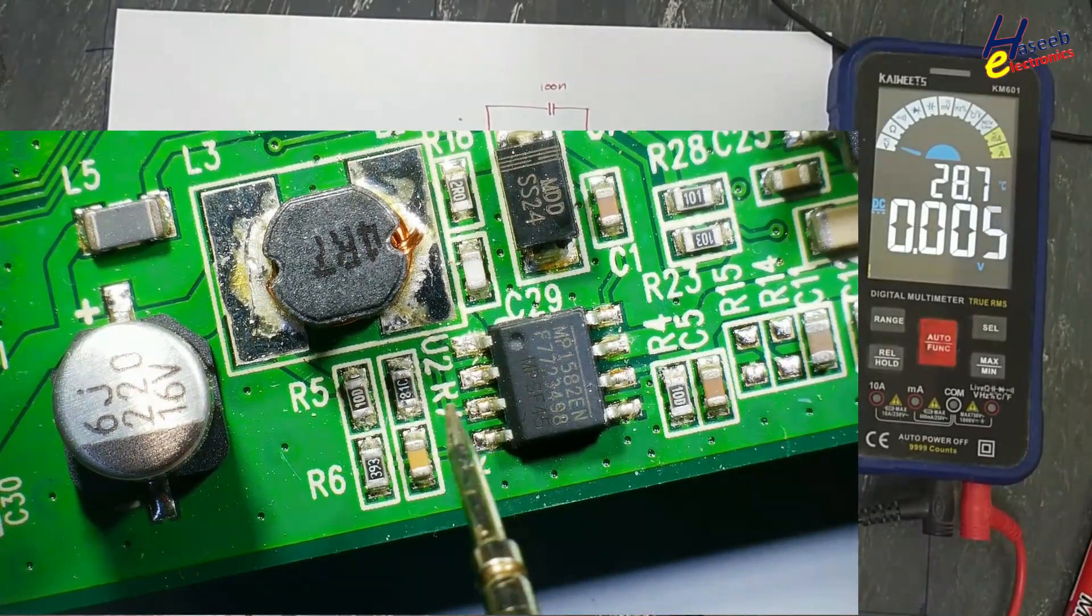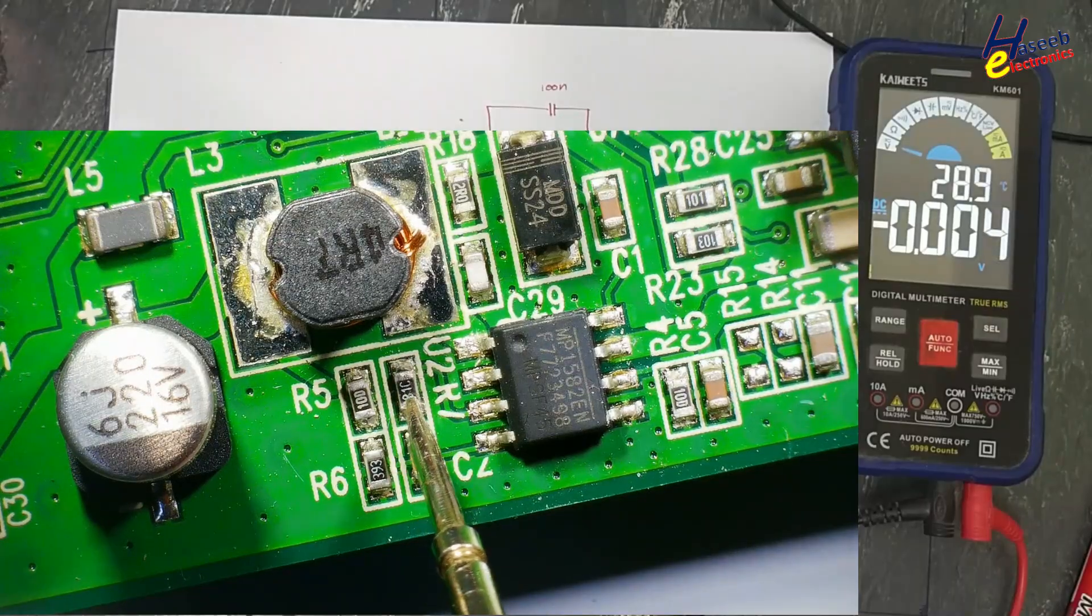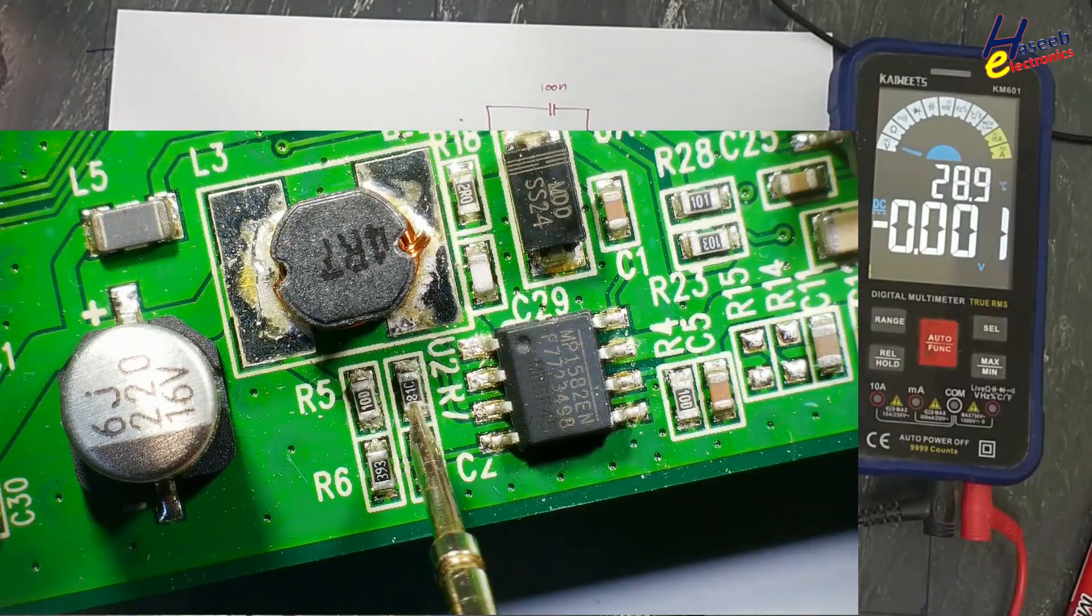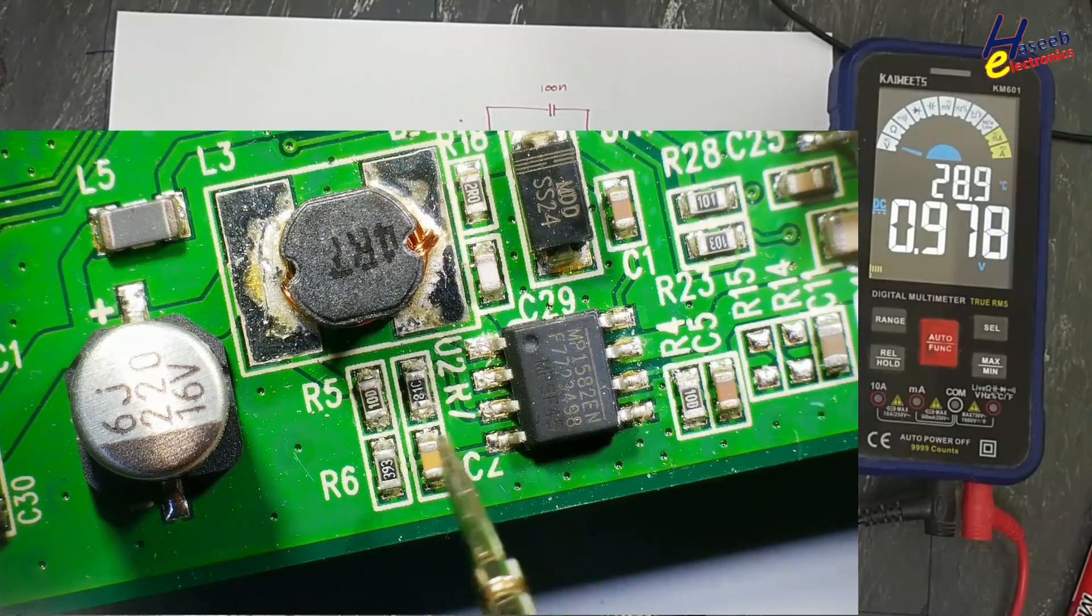Pin number three, that is compensation pin, that is connected to this 01C resistor 68.1k compensation. 0.97 volts.